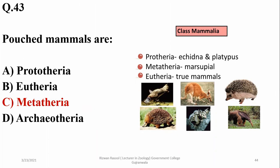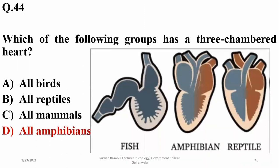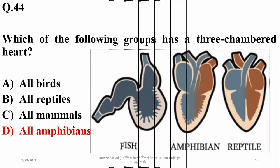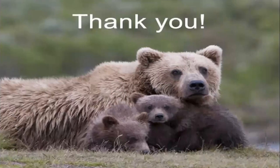Question thirty-four: the group with a three-chambered heart is amphibians — so delta. Fishes have a one-chambered heart, amphibians have three chambers, reptiles have four chambers, and birds and mammals have a completely partitioned four-chambered heart. Question thirty-five: the true statement is that all mammals have hair and mammary glands — so right option is beta. This concludes our basic MCQs about Kingdom Animalia. Thank you.